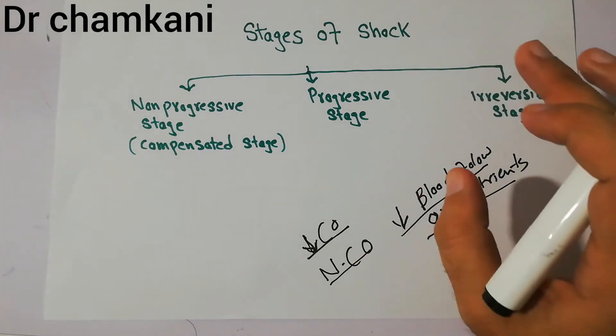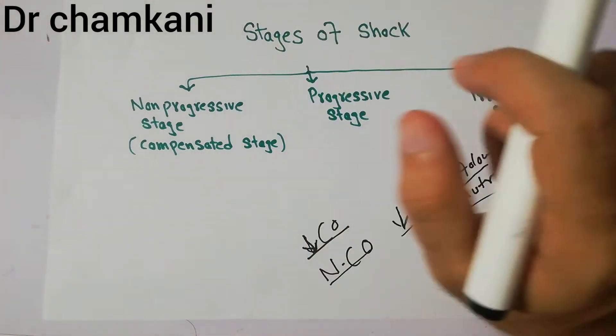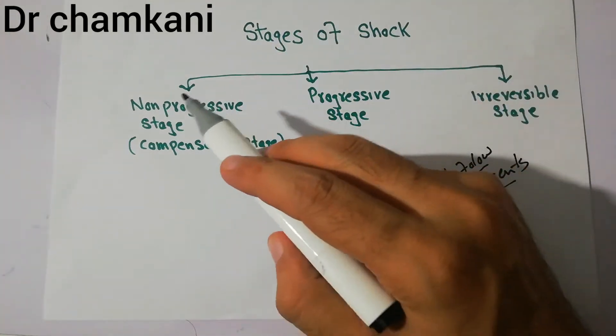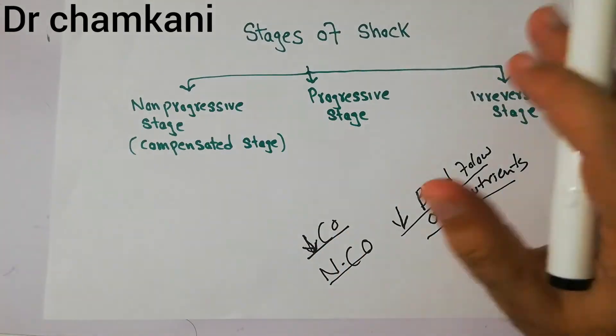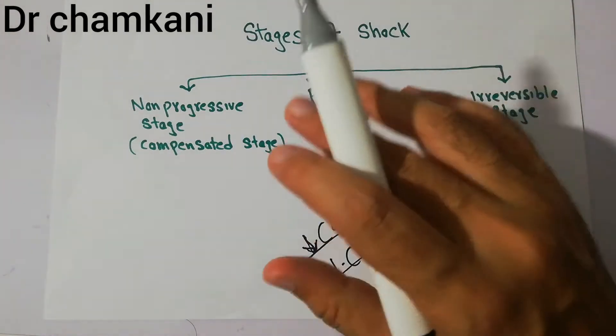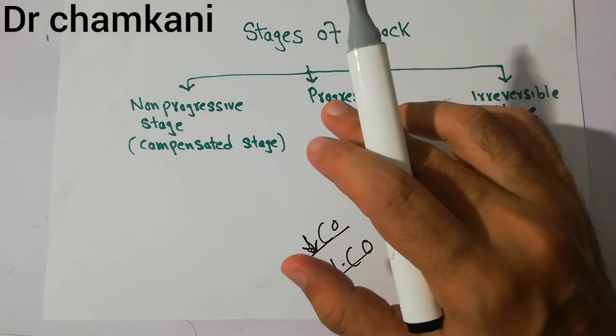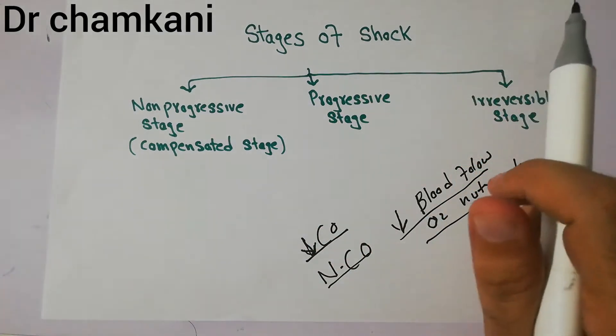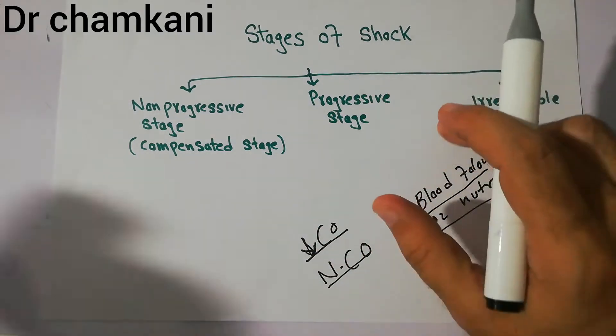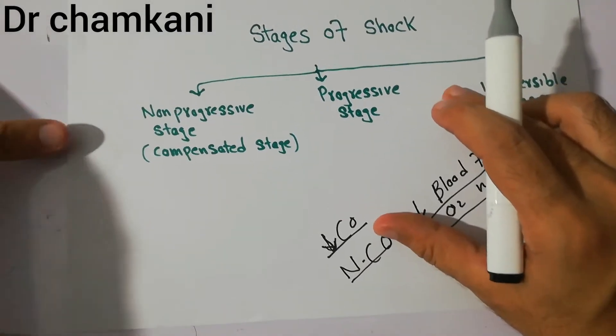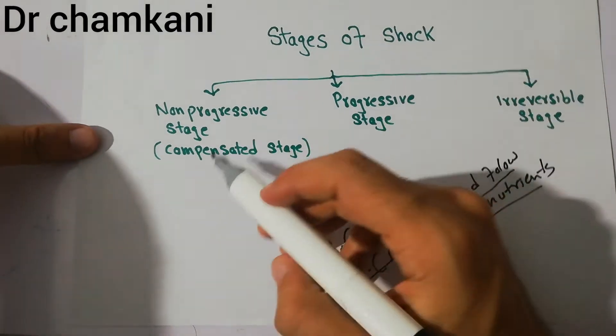Each and every category of shock has around three stages. The initial stage is the non-progressive stage, then the progressive stage, and finally the irreversible stage. So what are basically these different stages of shock?